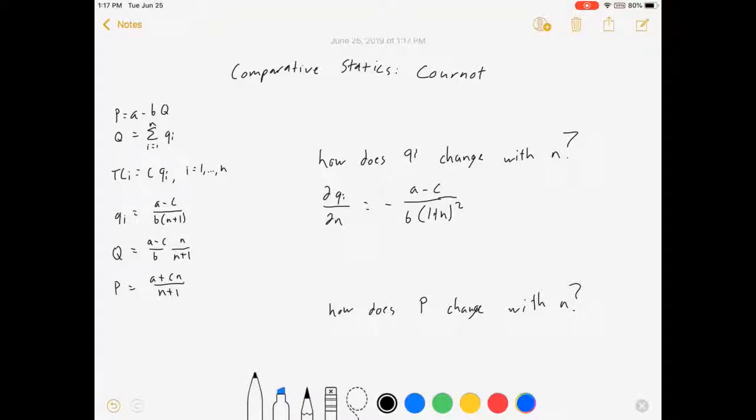Now, first thing I can tell you is under most parameterizations, this will be negative, meaning that the more firms there are, the less each firm makes individually. The other thing I can tell you is based on what values of A, C, B, and N are realized, I can tell you the exact rate of change for every additional firm. How fast does quantity fall?